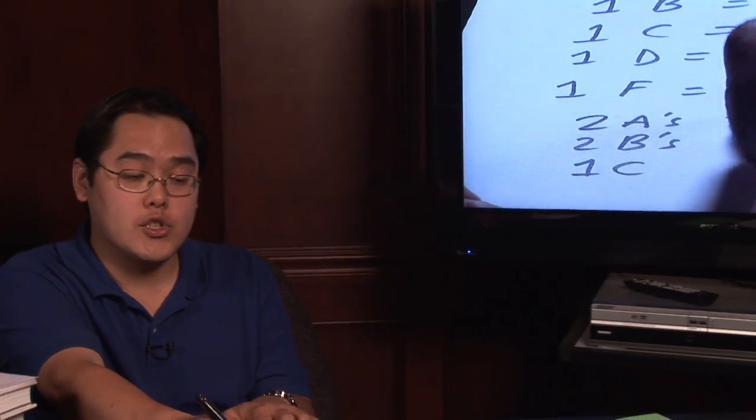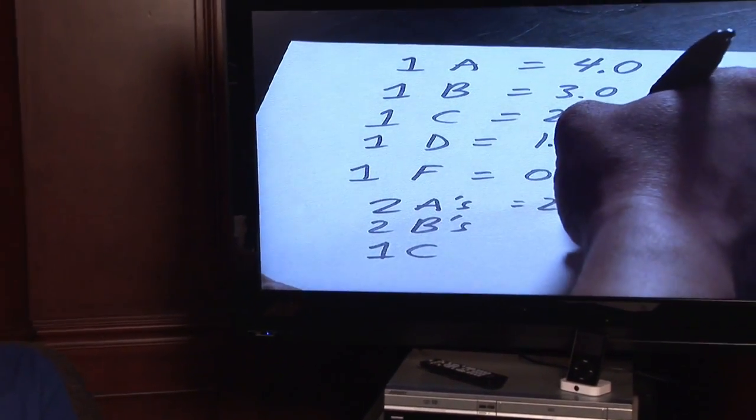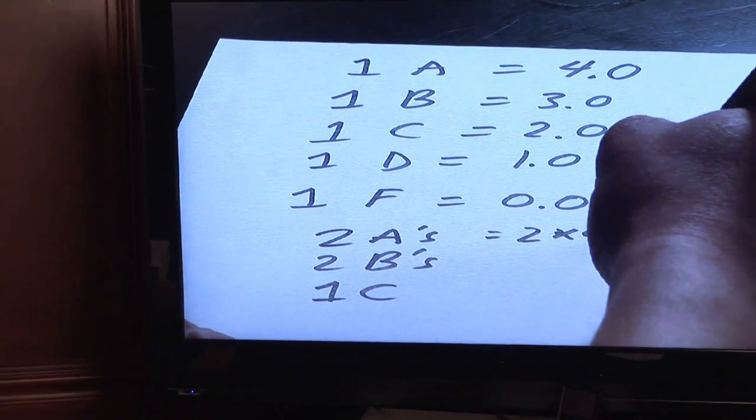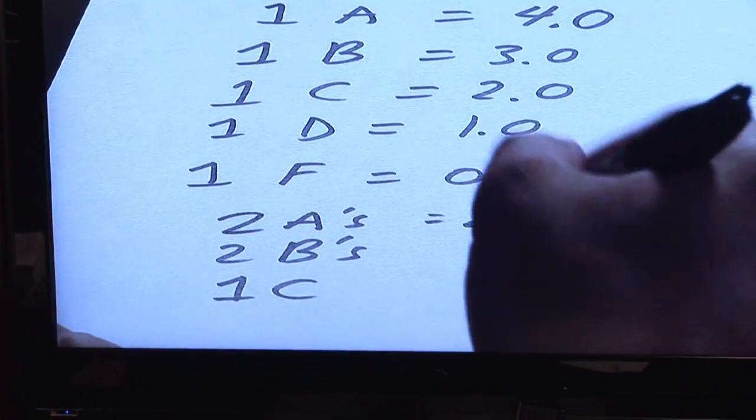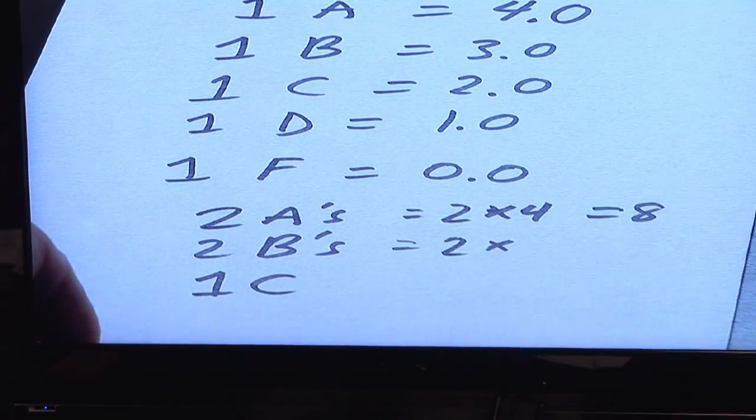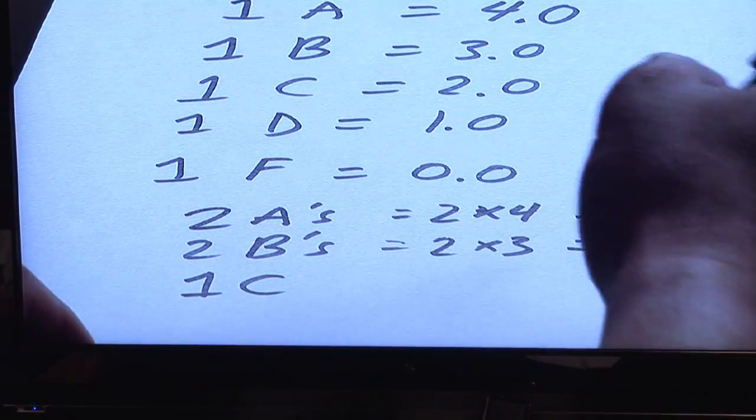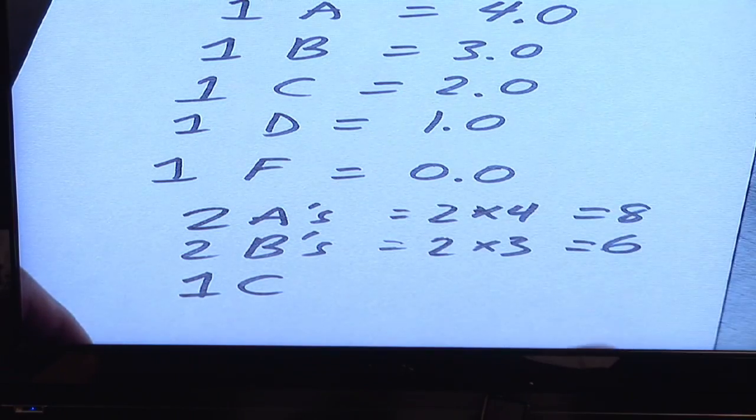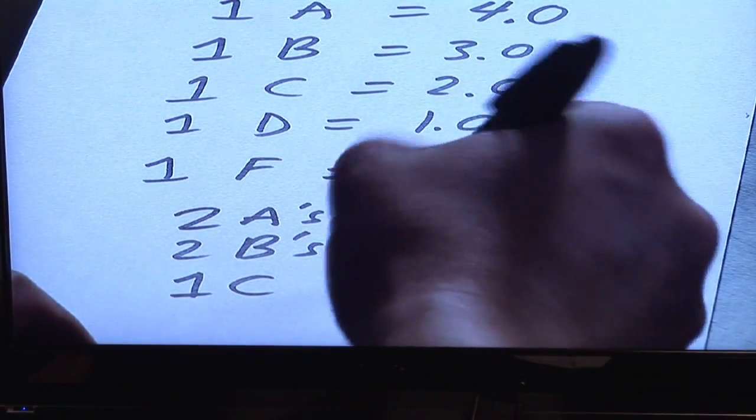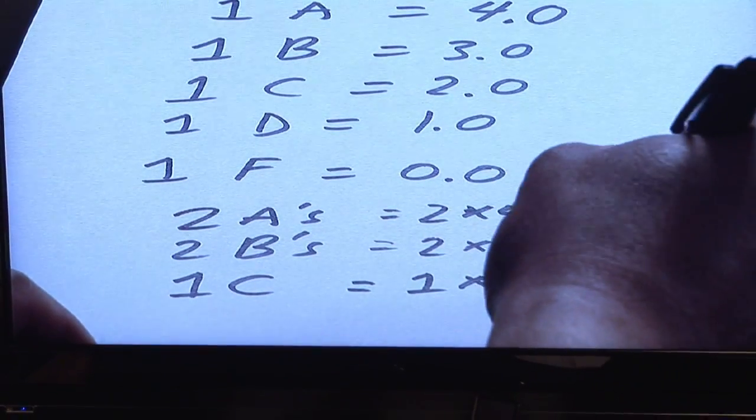Basically, you would take each number and multiply by how much each letter is worth. So because you have two A's, and each A is worth four points, you take two times four, which is going to give you eight. Then, you take the two and multiply by how much each B is worth, and that's three, and two times three gives you six. And that one C, you have one times two, which gives you two.